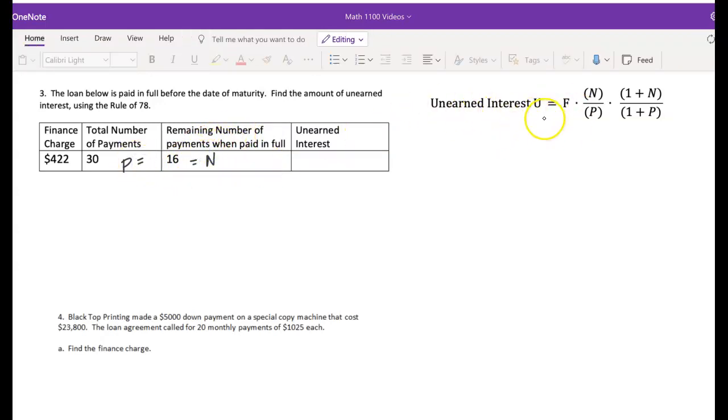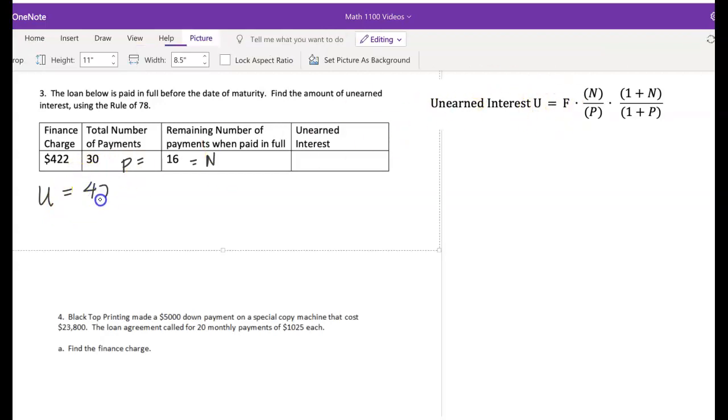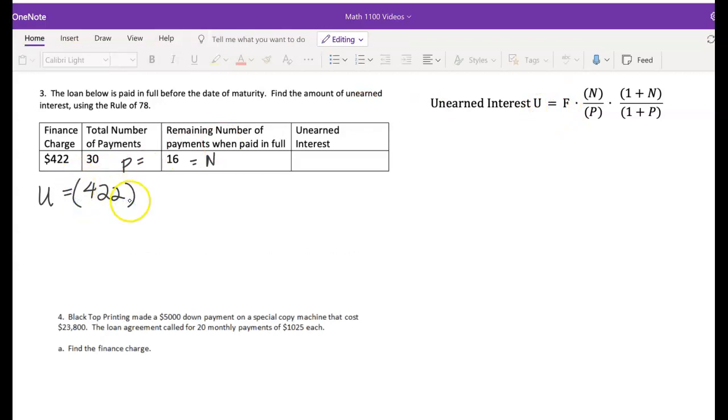So let's start to apply it into this formula. The unearned interest, the interest that the bank has not earned because you paid the loan in full, is going to be that finance charge, $422 in the numerator, okay, times, and we've got a fraction, N over P. N is 16 payments left, and P says that there were 30 total. I'm not going to worry about reducing that fraction until the very end because I'm going to get a dollar amount and I'm going to have to round my decimal then anyway. The next fraction is 1 plus N over 1 plus P. So if N was 16, one more than that is 17.